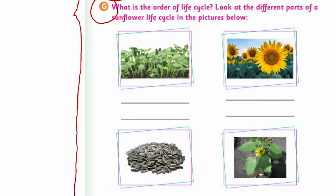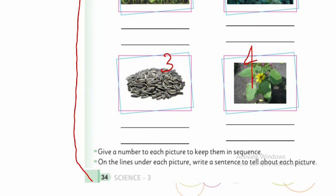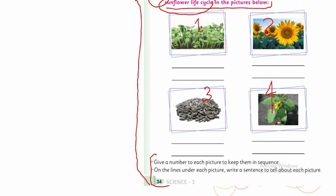This is also a beautiful one. Just read the text and start acting upon it. What is the order of life cycle? Look at the different parts of sunflower life cycle in the pictures. You have four pictures. You will perform this activity, and I'm sure you will enjoy it.